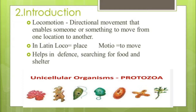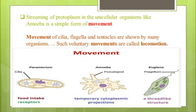Not only Protozoans, but all living creatures generally move for these three important needs. In this diagram you can see the unicellular organisms belonging to Protozoa. All these are unicellular, single-celled organisms, but they can perform all metabolic activities. Movement in unicellular organisms like Amoeba means streaming of protoplasm. Cell organelles like cilia, flagella, and tentacles also show movements, and with the help of these organelles Protozoans show voluntary movements called locomotion.